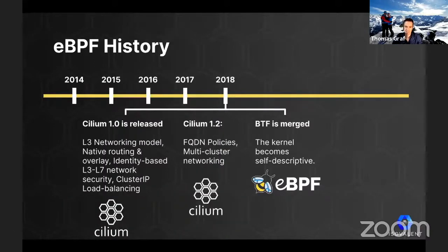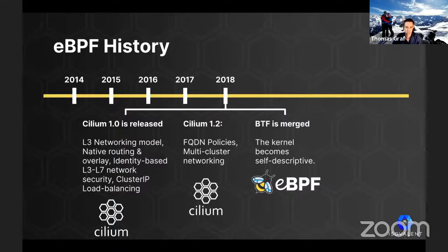In 2018, Cilium 1.0 was released — a big moment for us. We also released 1.1 and 1.2 in the same year, which extended the feature set massively, bringing things like Kubernetes cluster IP load balancing, FQDN policies, and multi-cluster networking. It was also the year BTF was merged into the kernel, making the kernel self-descriptive, which later unlocked giant features in the tracing world.